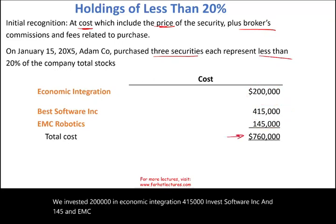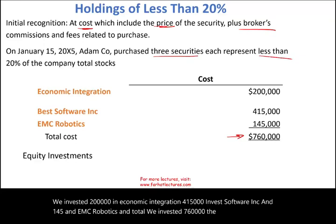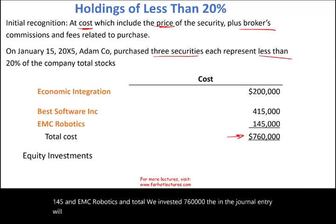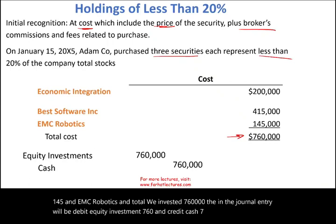We invested $200,000 in Economic Integration, $415,000 in Best Software Inc., and $145,000 in EMC Robotics. In total, we invested $760,000. The journal entry will be: debit Equity Investment $760,000, and credit Cash $760,000.